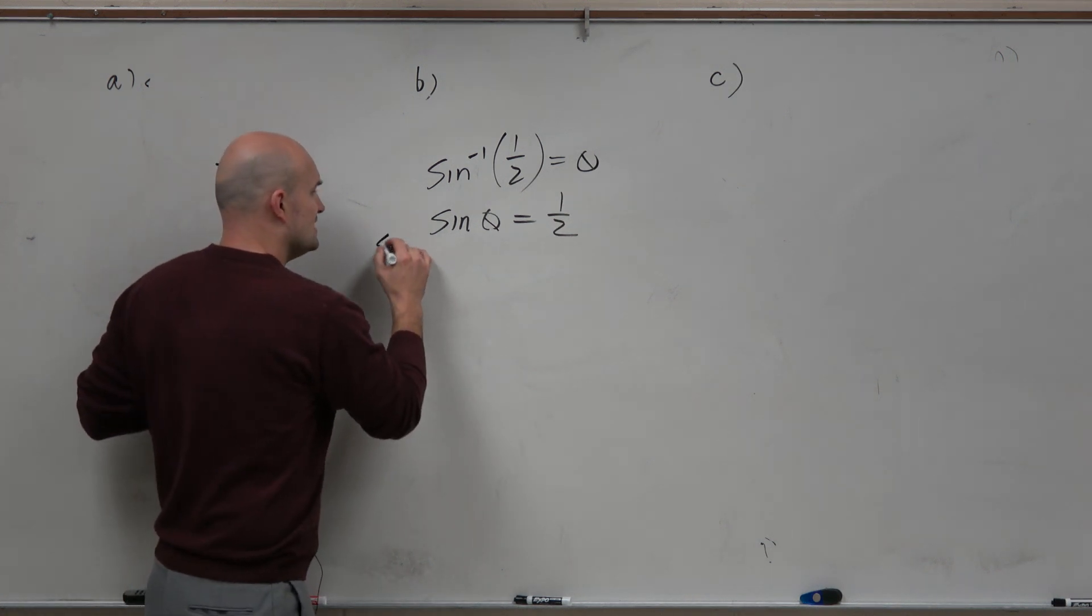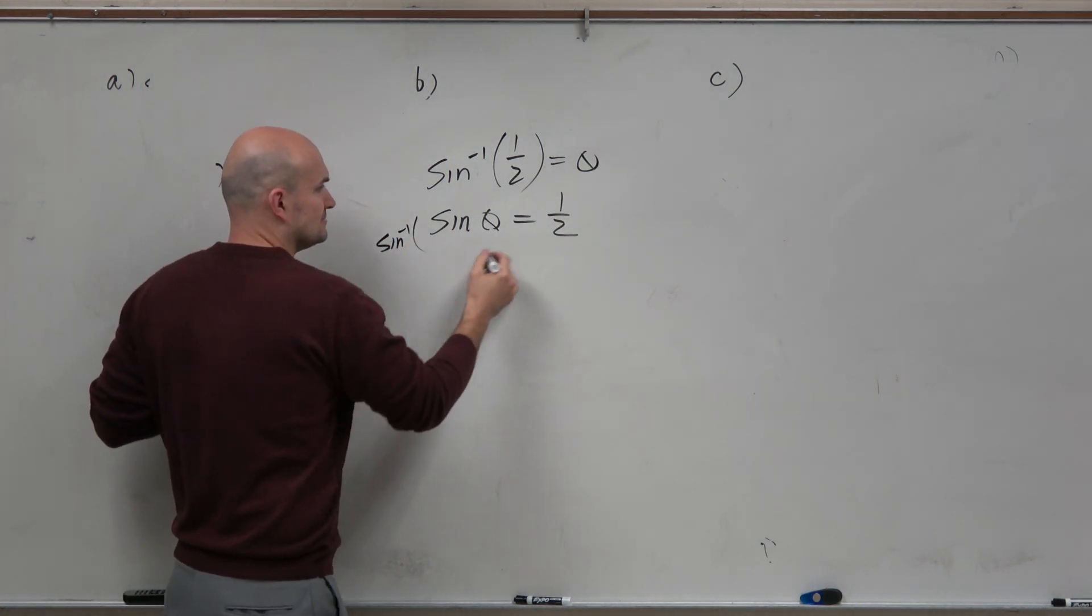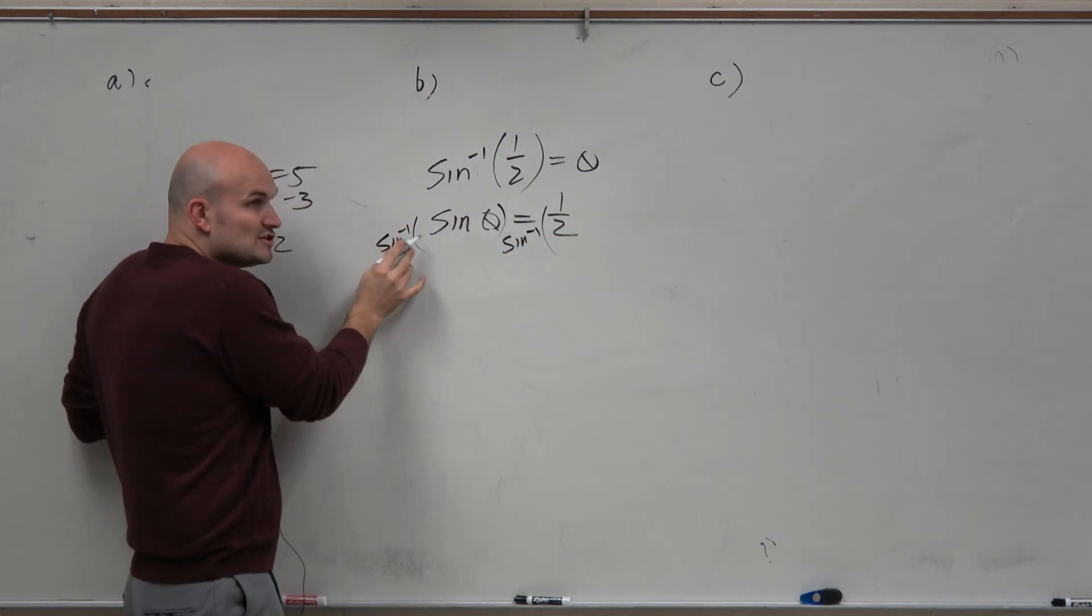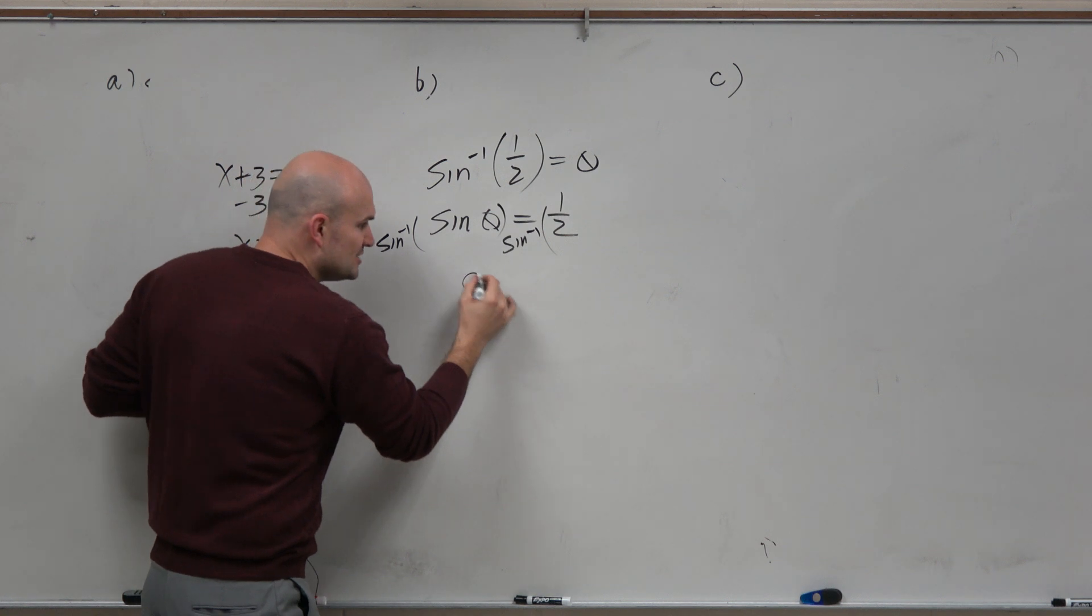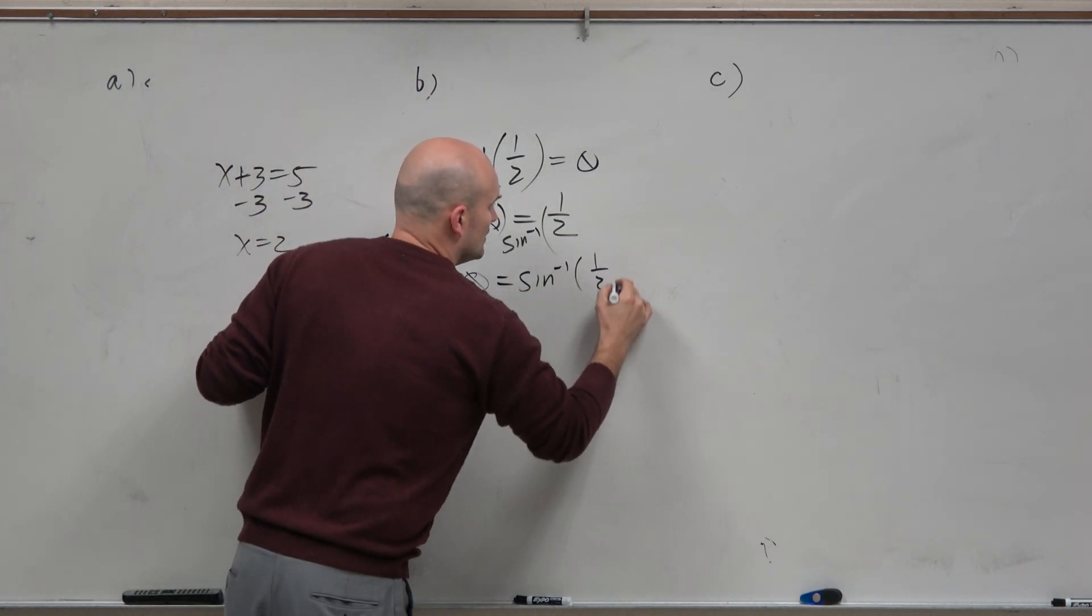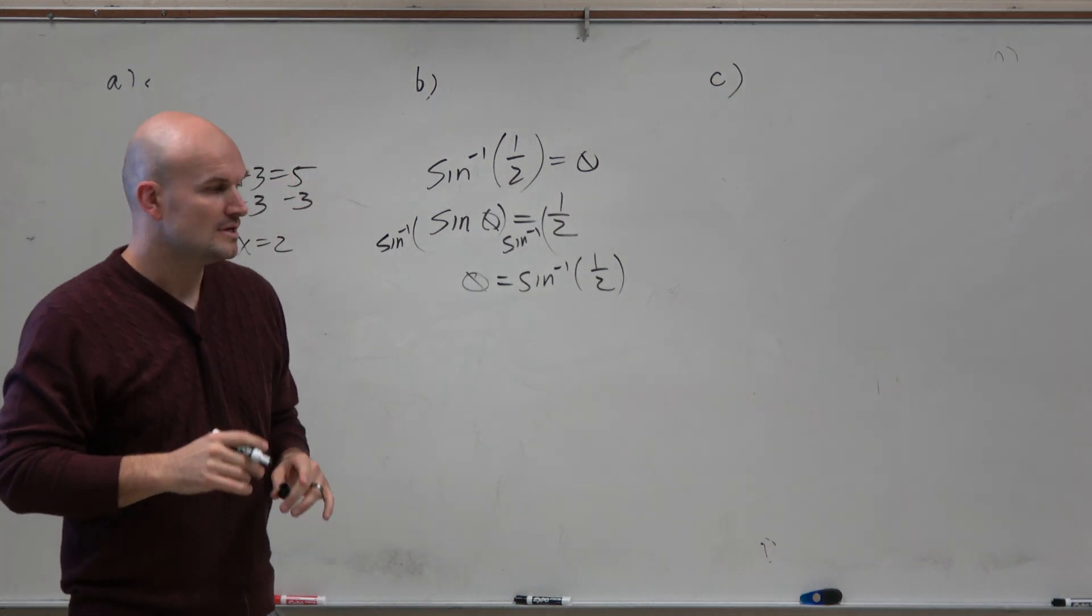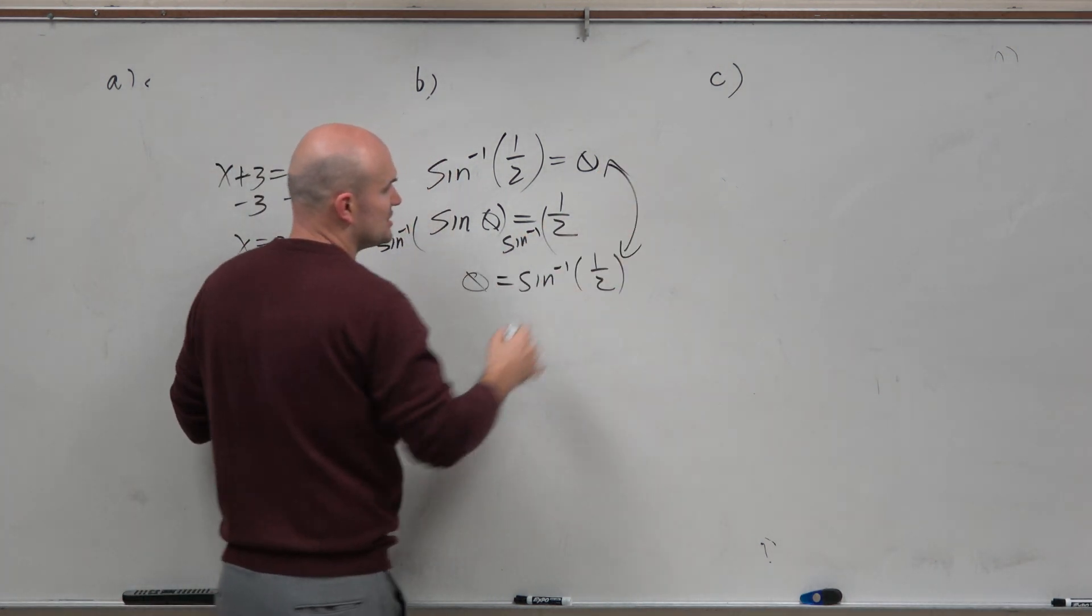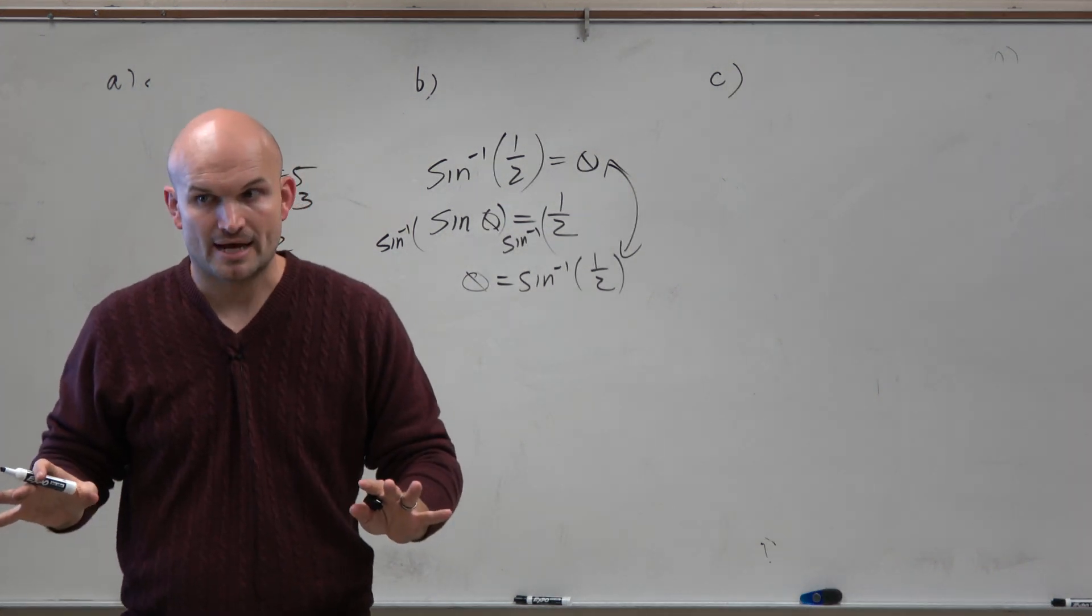So we can take the sine inverse. The sine inverse is going to undo sine, leave me just with theta, is equal to the sine inverse of 1 half. So I want you, everybody, to understand why these two equations are the same.